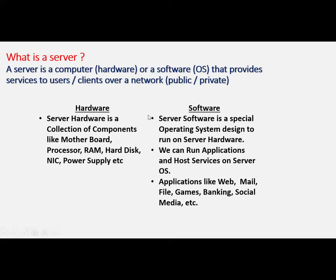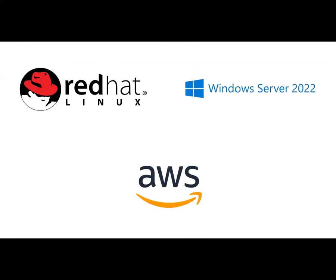What operating systems do we install on server machines? You can see two names: Linux — specifically Red Hat Linux — and Windows Server. Across the globe, in 95 to 97% of cases, in any country and any company, a server will have either a Linux server operating system or a Windows server operating system.